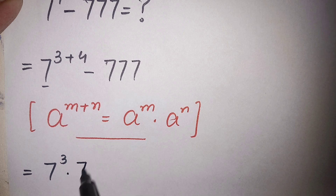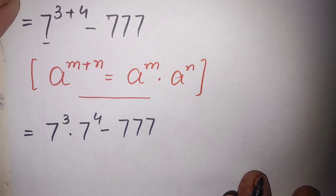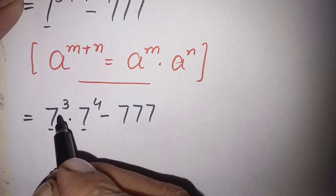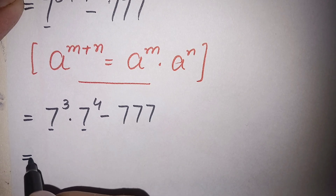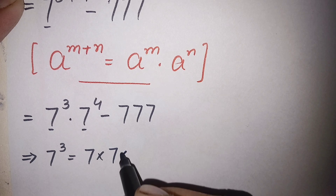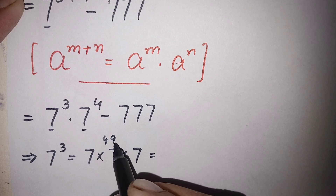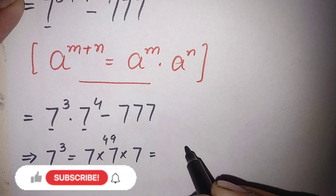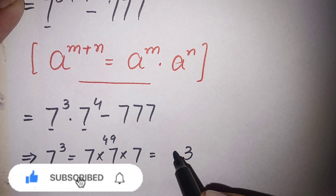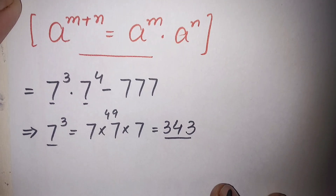Now we have 7 raised to power 3 times 7 raised to power 4, minus 777. Let's find the value of 7 raised to power 3 first. 7 raised to power 3 means 7 multiplied three times: 7 times 7 is 49, and 49 times 7 — 7 times 9 is 63, carry the 6; 7 times 4 is 28, plus 6 is 34. So 7 raised to power 3 equals 343.